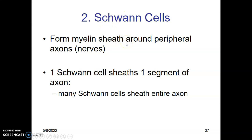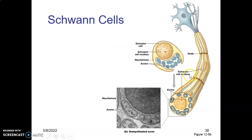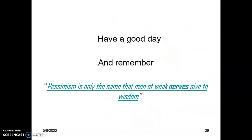The Schwann cell helps form myelin sheath around peripheral nerve axons. One Schwann cell provides a sheath over one segment of the axon, so many Schwann cells are responsible for myelination of the full axon of a neuron. You can see here a Schwann cell wrapping its cell membrane — the Schwann cell causing myelination in one segment is different from the one causing myelination in the next segment. Thank you very much.